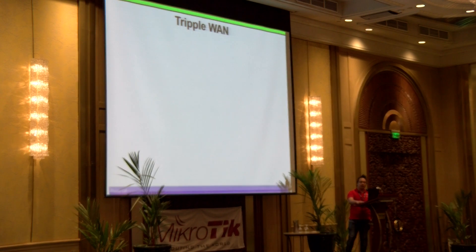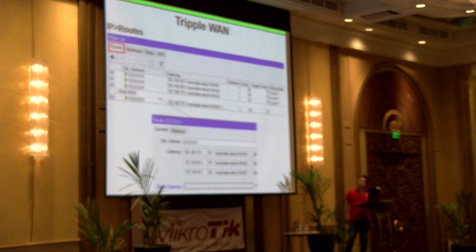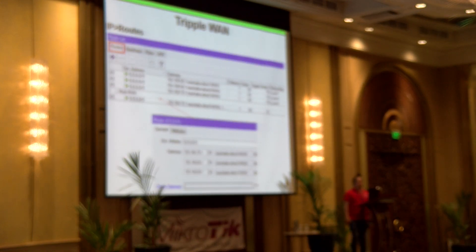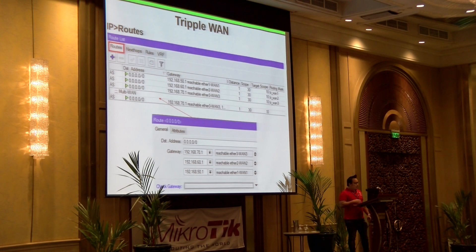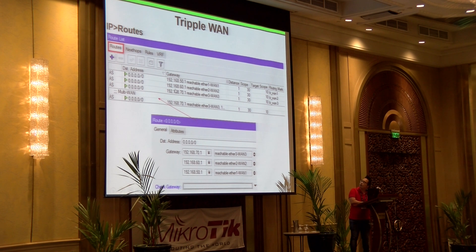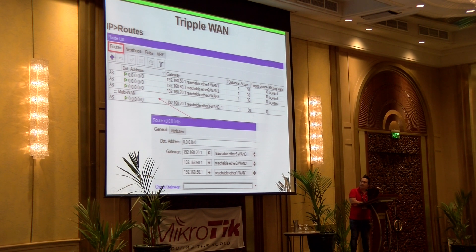Then lastly, our IP routes. So when you go out of 50.1, it's for your ISP1 — 1.1; 60.1 for your ISP2; 70.1 for your ISP3, and then your ECMP route. So this is your ECMP route.